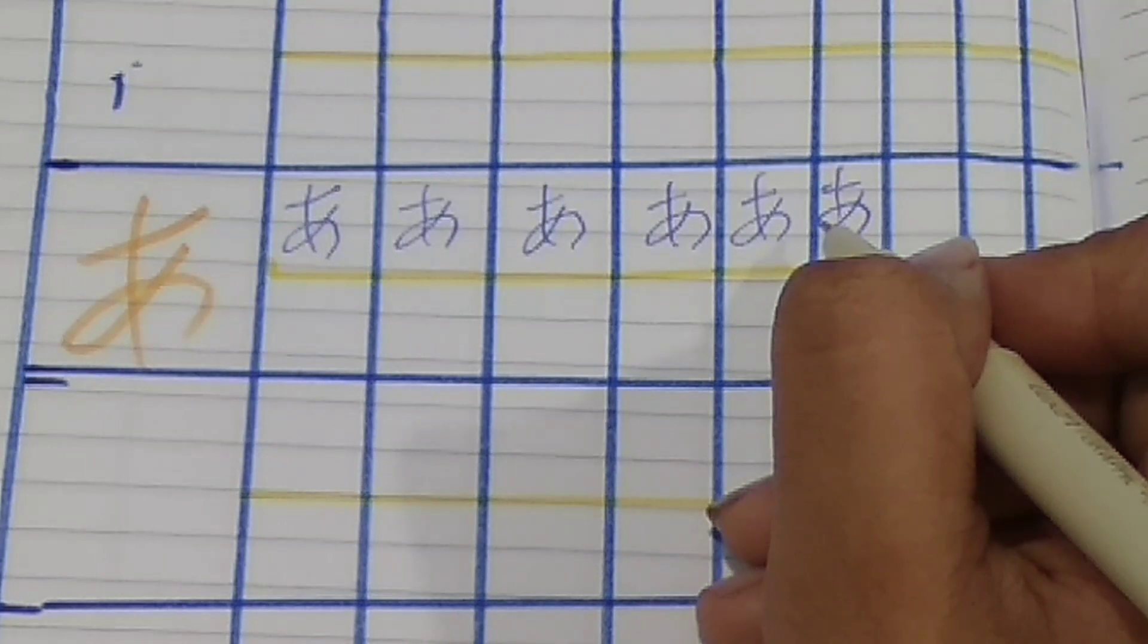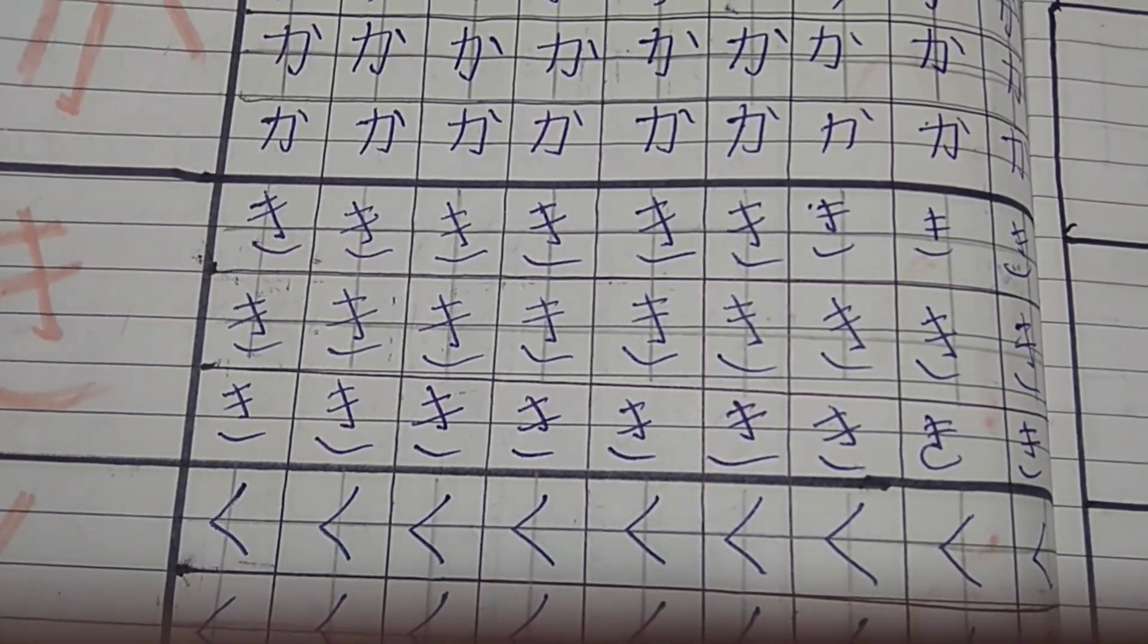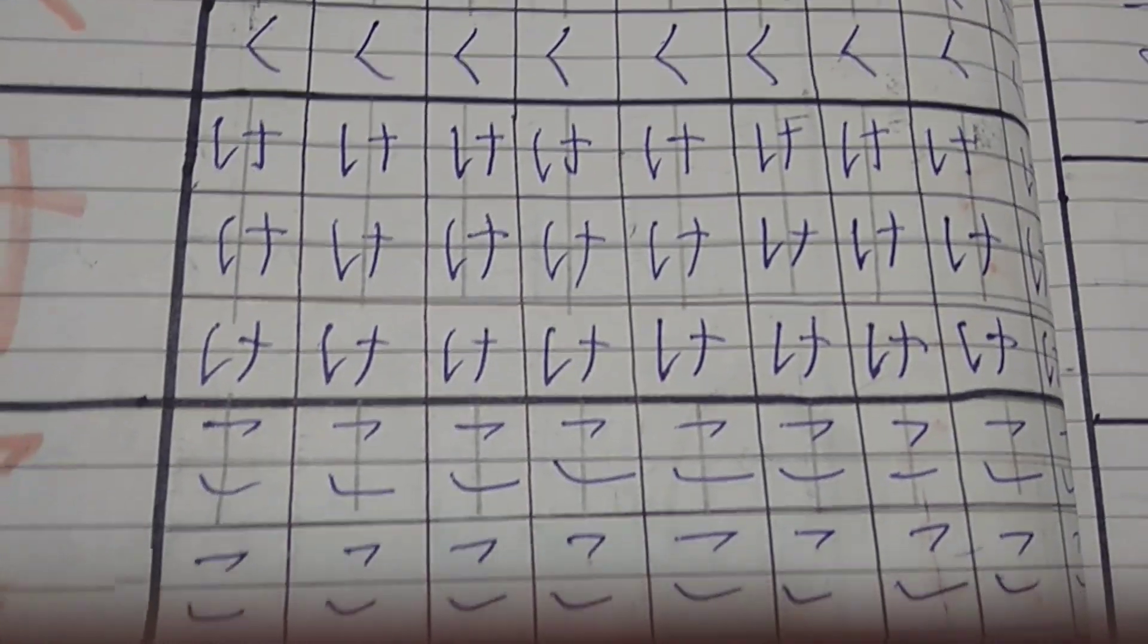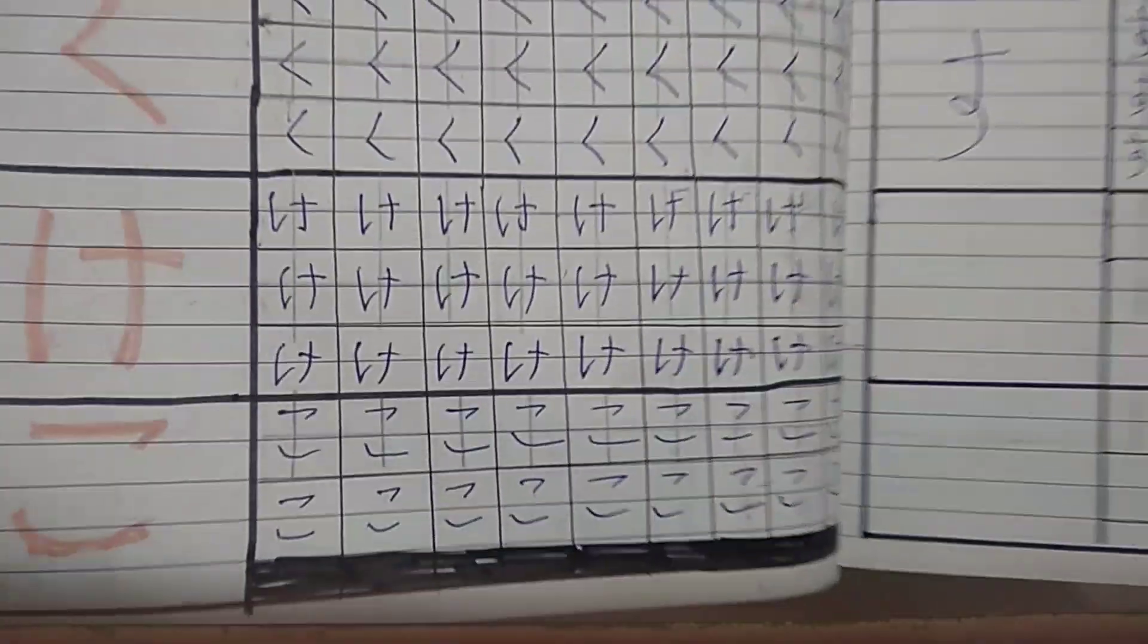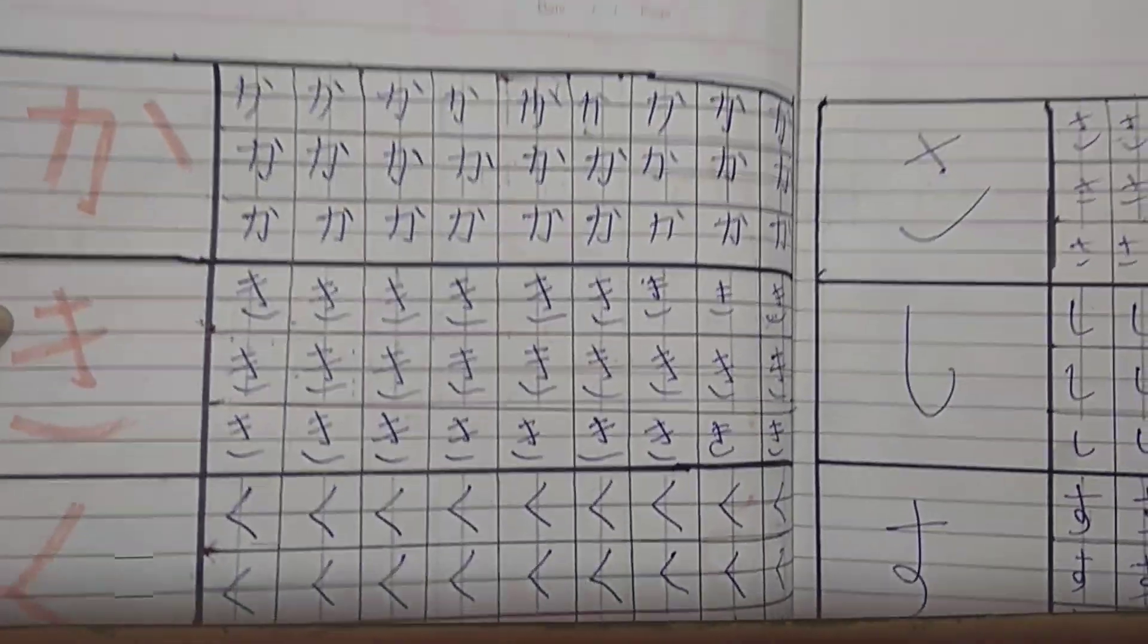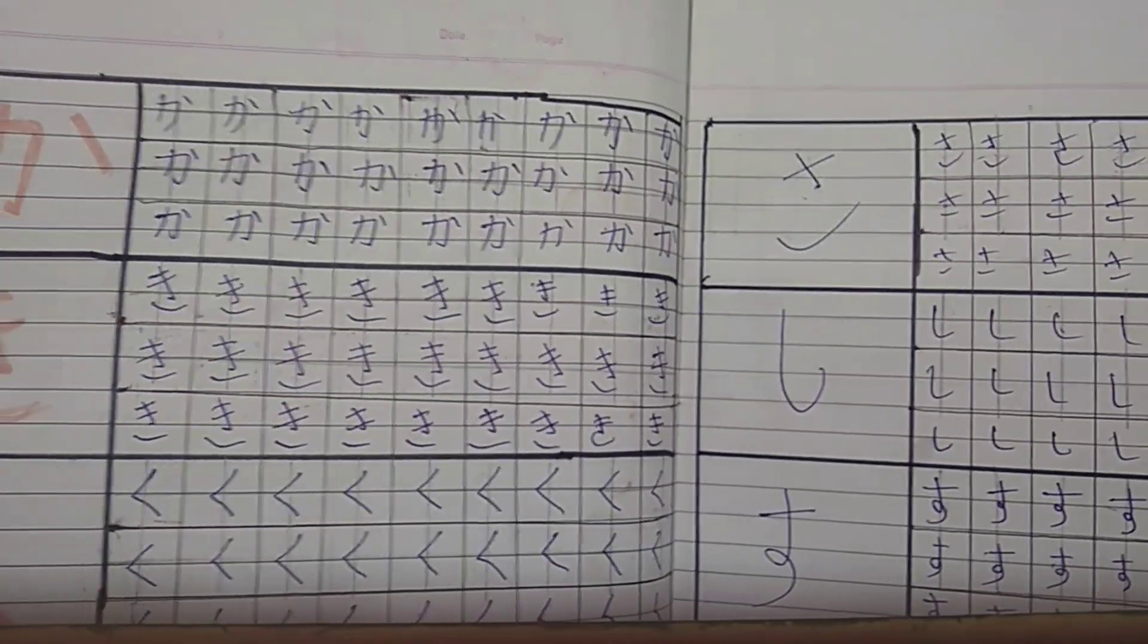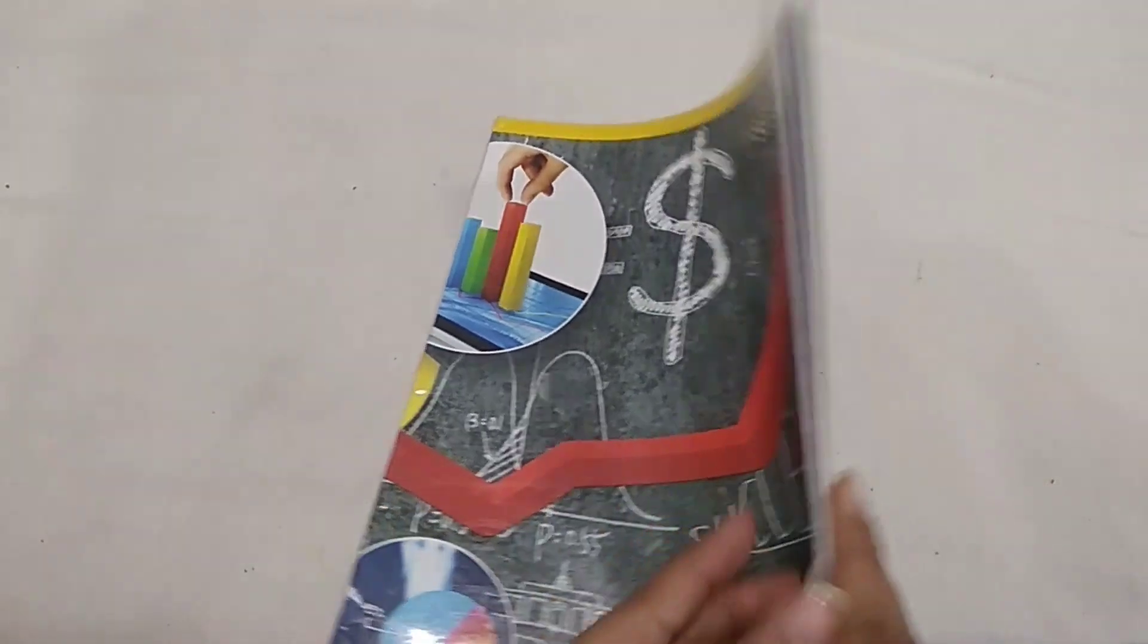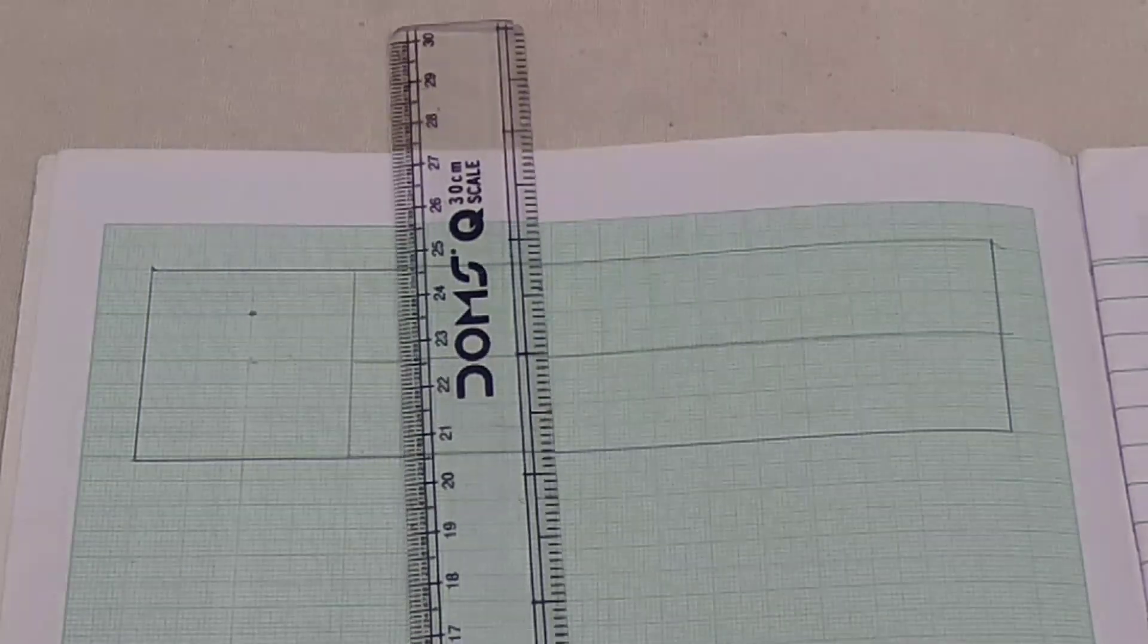And now the second way is this. Third one you can make on a graph book or paper which I have like this. And you just need to make lines.